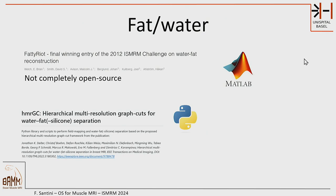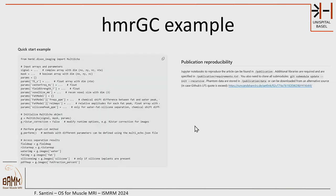Fat-water reconstruction is the other main quantitative biomarker we are using. Personally we are still using Fatty Riot, which is probably a fantastic algorithm — a bit slow, but also not completely open source, so it's not something I want to focus on. The group of Dimitris Karabinos has released a lot of general-purpose water-fat separation code in Python, and that's truly open source. It still has a programming interface so you need to use Python and set some parameters and load the images yourself, but it's very well done and I hope to use it in the future.